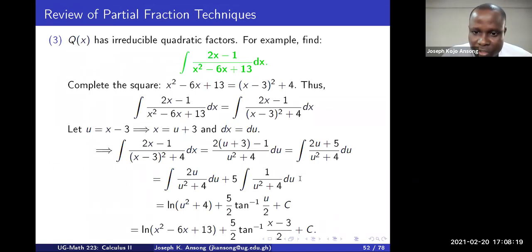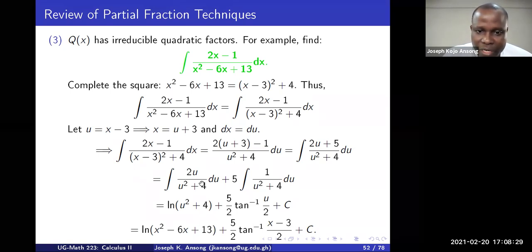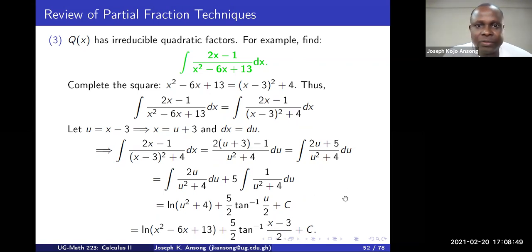Using that formula, the integral of 1 over (u² + 4) du gives (5/2) arctan(u/2) + C. This can now easily be integrated using the arctan formula. Replacing u with x - 3 gives the final solution: ln((x-3)² + 4) plus (5/2) arctan((x-3)/2) + C.